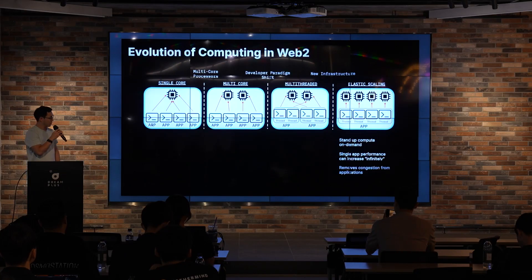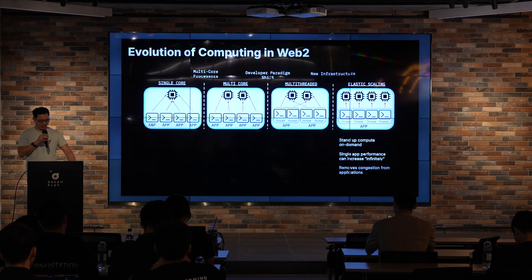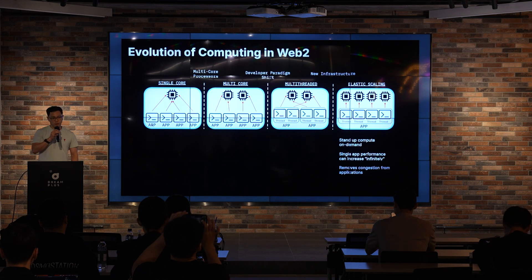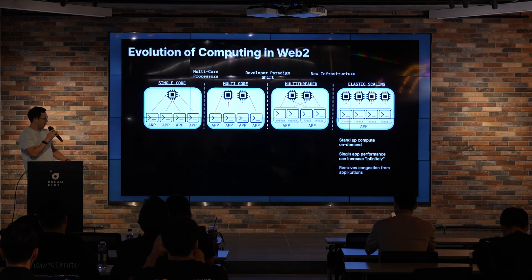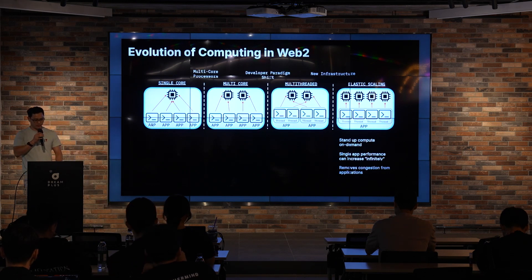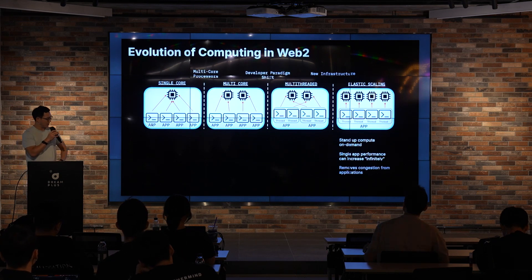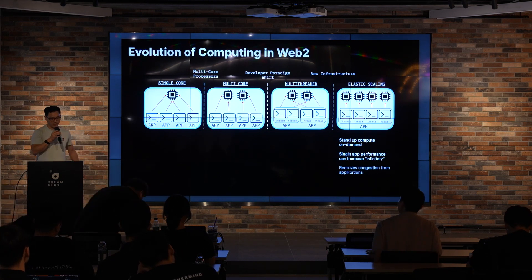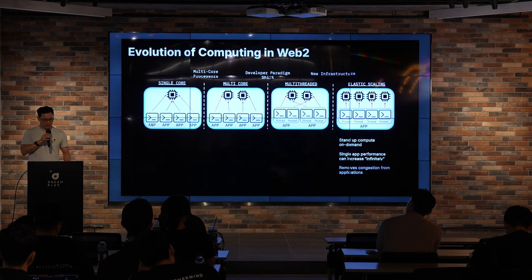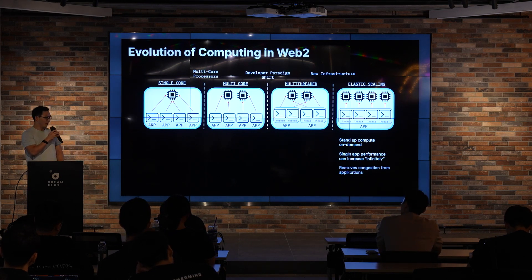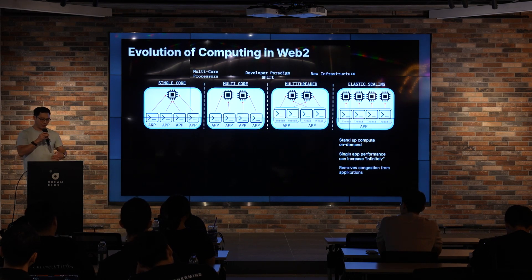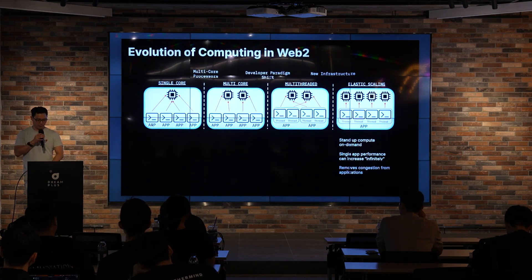Eventually, elastic scaling infrastructure came out — cloud services like AWS that allow people to provision almost infinite numbers of cores based on their needs. As long as your application was already multi-threaded, you could leverage this by expanding your application out into almost a boundless amount of compute space. Most applications in the Web2 world don't really have capacity limits because they can enjoy elastic scaling — you can remove congestion and scale performance almost infinitely.